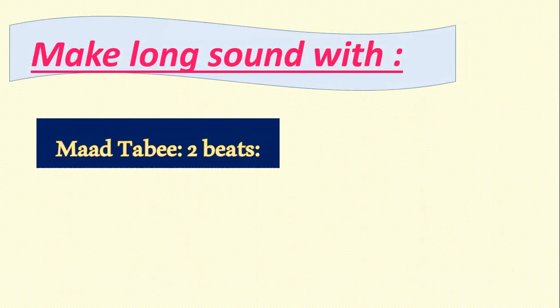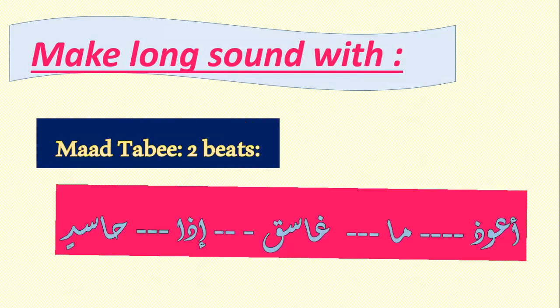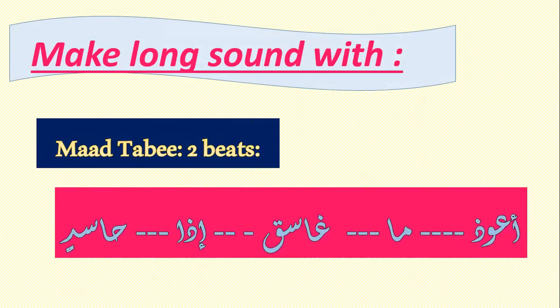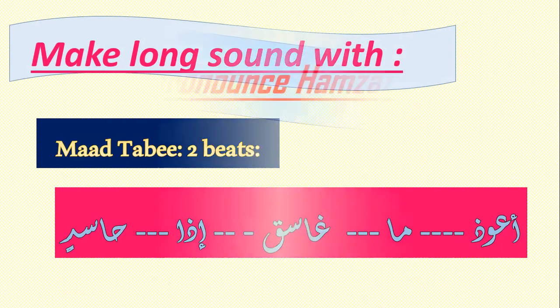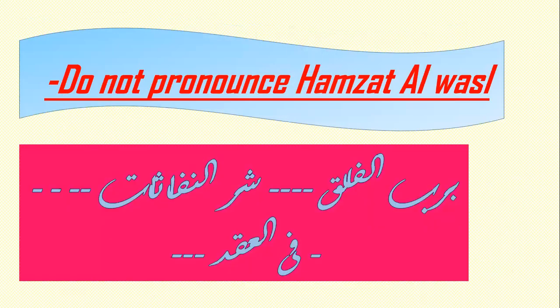Make a long sound with two beats — Madd Tabi'i. Please repeat: a'udhu, ma, ghasiqin, idha, hasidin. Don't pronounce Hamza al-wasl. Bi-rabbi al-falaq — not bi-rabbi al-falaq with a stop. Sharri naffasati fi al-uqad.